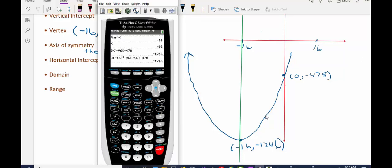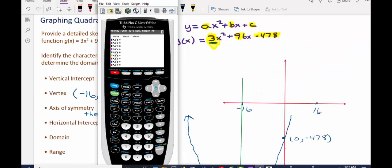But what my rough sketch does allow me to do is it helps me find a good window, so I'm going to press y equals in my calculator. I'm going to type in 3x squared plus 96x minus 478, and if I just press graph, I'm probably graphing on a standard window.